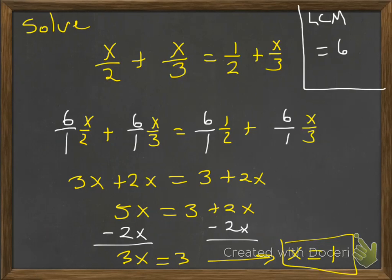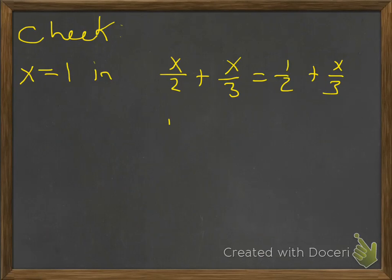And the last thing we've got to do is, you know, we want to get all our points. We want to make sure we've done it right, so we go ahead and check it. We're going to check it in the original problem. We have x over 2 plus x over 3 equals 1 half plus x over 3. Plug in the 1. 1 half plus 1 third is, in fact, the same thing as 1 half plus 1 third.